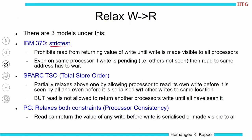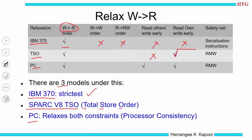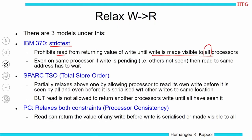IBM 370 is the strictest order. It prohibits the read from returning the value until the write is made visible to all the processors — this is the write atomicity requirement. Write atomicity it does not permit at all. It says even if you write the same variable and want to read your own variable, that is not permitted. If you are reading a variable from somebody else, until everybody in the system has seen that variable, you cannot read. So it is the strictest model — if the write is still pending and others have not seen it, the same processor is made to wait.